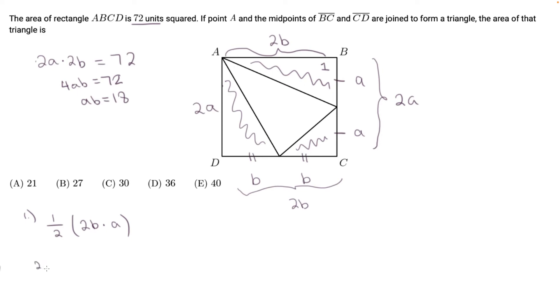And then for triangle 2, the area is half times the base 2a times the height, which is b.